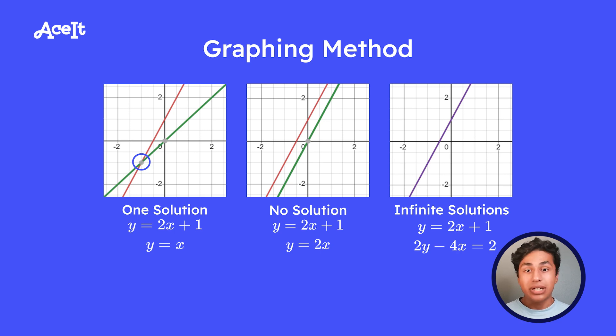So this is our first scenario. We have y equals 2x plus 1 and y equals x. And the solution is where those two lines intersect, or in this case, 1 comma 1.